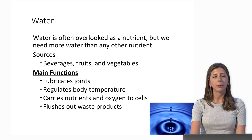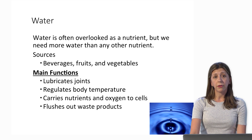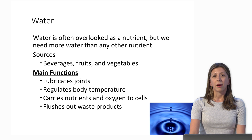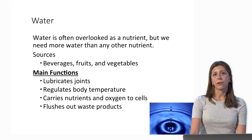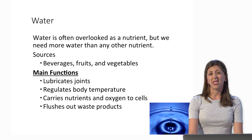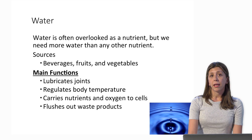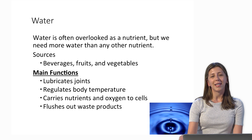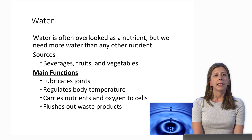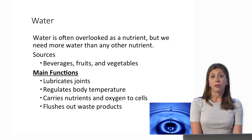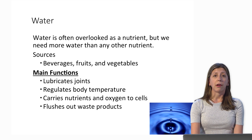Last but certainly not least is water. Water is actually a macronutrient and is often overlooked, but we need water more than any other nutrient. We get it from a glass of tap water or bottled water, but also from fruits and vegetables — think about biting into a piece of watermelon, which contains a lot of water, as do vegetables like broccoli and kale. Water's main functions are to lubricate joints, regulate body temperature, carry nutrients and oxygen to all cells in our body, and flush out waste products.